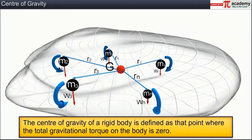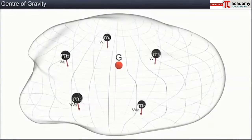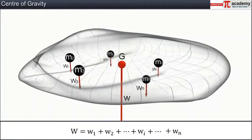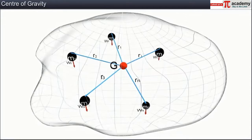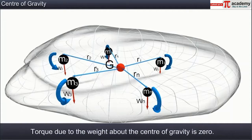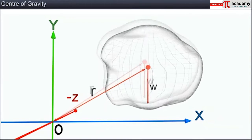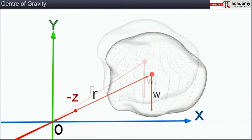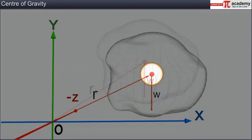The center of gravity of a rigid body is defined as that point where the total gravitational torque on the body is zero. The weight of a rigid body is the sum of all these small weights and acts through its center of gravity. When torque is calculated about the center of gravity, weights of some mass elements produce clockwise torque and others produce anti-clockwise torque, making the net turning effect zero. Hence the weight of a rigid body cannot produce any net torque about its center of gravity, and torque due to weight can be calculated by assuming the whole weight concentrated at its center of gravity.